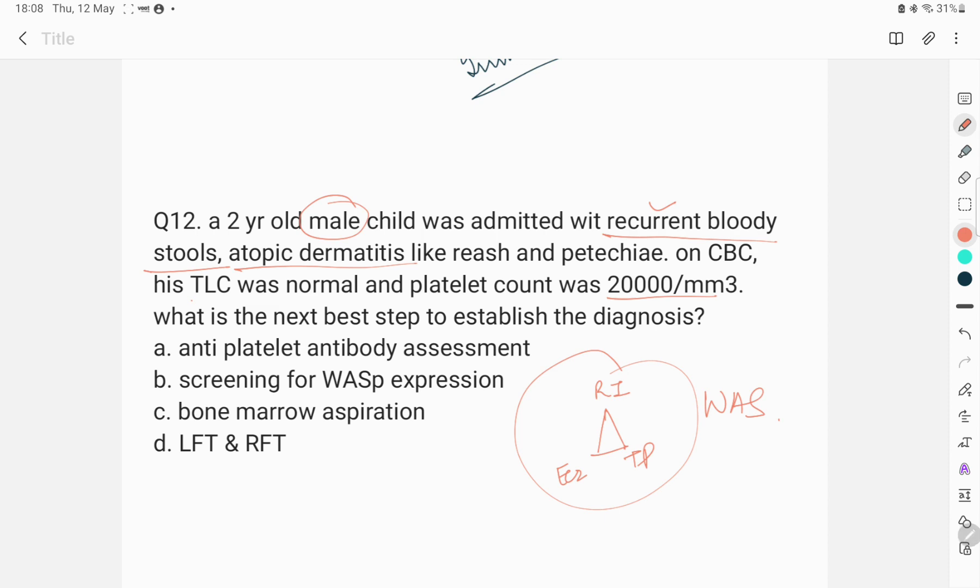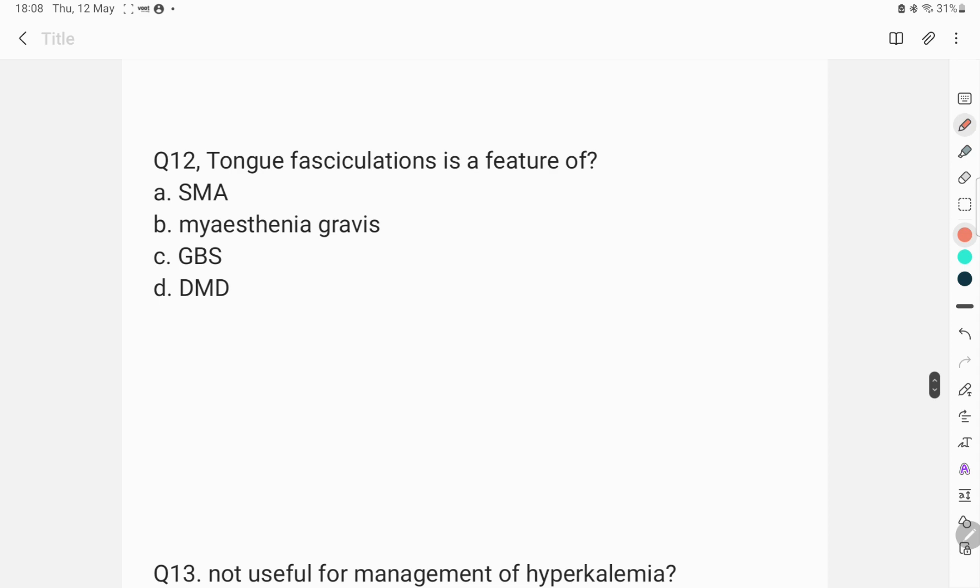What is the next best step to establish the diagnosis? Anti-platelet antibody assessment, screening of WASP expression that is Wiskott-Aldrich syndrome protein expression and bone marrow aspiration, LFT and RFT. The answer to this question is screening of WASP expression.